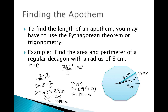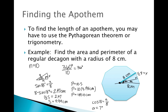Now we need to find the apothem. We're going to use cosine, because we're looking for the adjacent side A relative to our angle, using the hypotenuse. Cosine of 18 degrees equals A over 8. Solving for A gives cosine of 18 degrees times 8, and you get 7.61 centimeters.